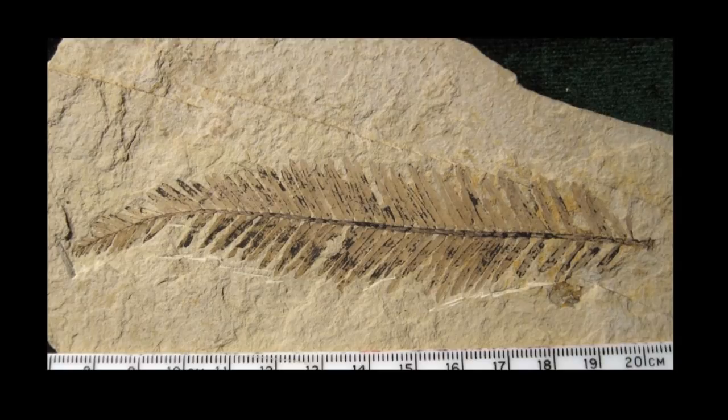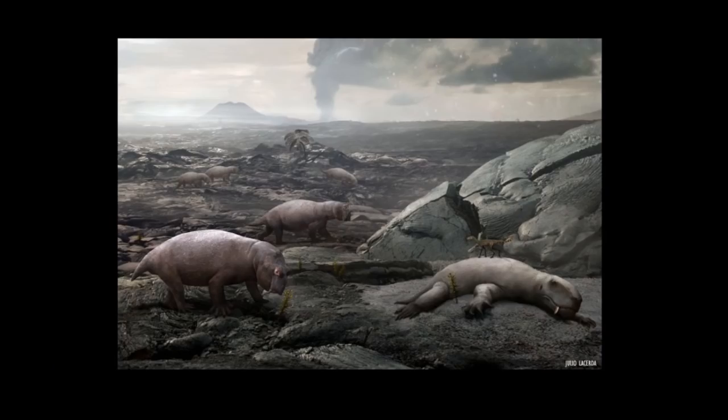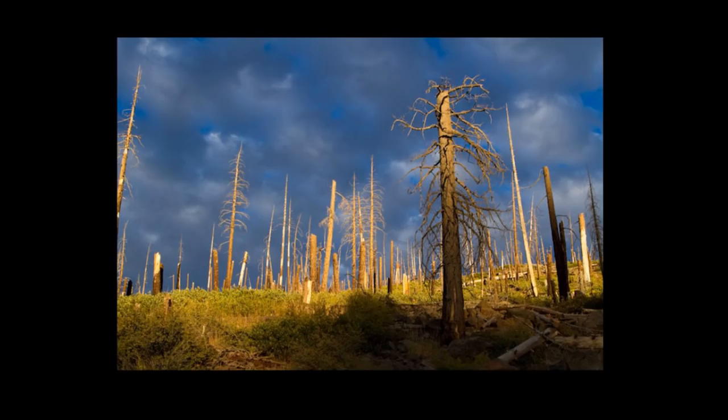A Lazarus taxon is something that disappears from the fossil record only to reappear later on. This type of thing is most common after major extinction events like the end of the Permian. A plant or animal may go extinct locally or throughout most of its range only to survive in small pockets, then eventually re-inhabit the areas where it formerly lived. Evolution doesn't require that it would undergo a major change.